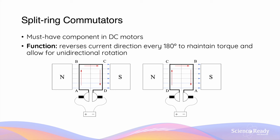In summary, the split ring commutators and the brushes that go with them are important components in DC motors. The function of split ring commutators is to reverse the current direction in each side of the coil every time the armature goes past the vertical orientation.